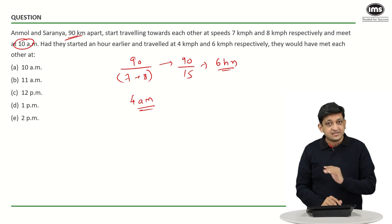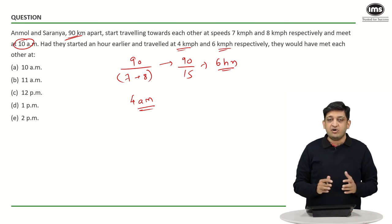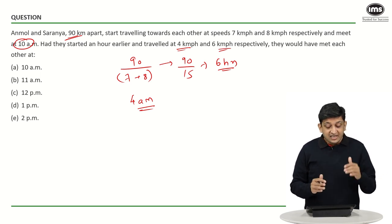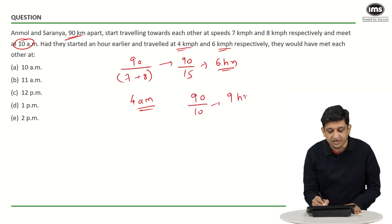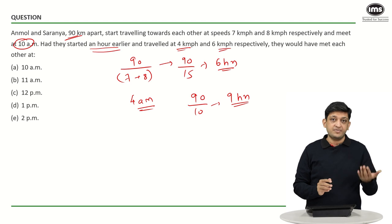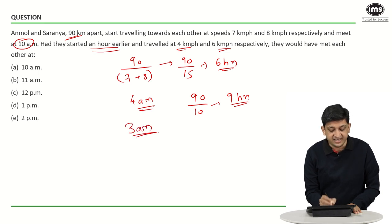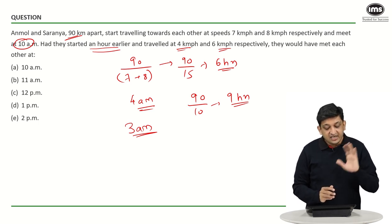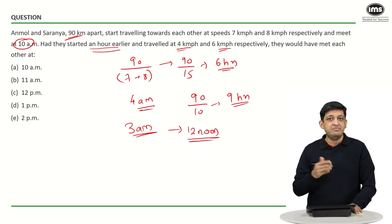In the second case, their speeds change to 4 kilometers per hour and 6 kilometers per hour, meaning the effective relative speed is going to be 10 kilometers per hour. The distance remains the same, so to cover 90 kilometers at a speed of 10 kilometers per hour, they would be taking 90 divided by 10, that is 9 hours. But they are starting an hour earlier — instead of 4 a.m., they will be starting at 3 a.m. So if they are starting at 3 a.m. and taking 9 hours, that is 3 a.m. plus 9 hours, which is 12 noon or 12 p.m.